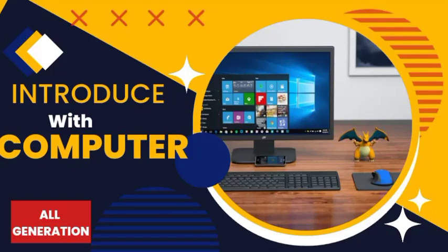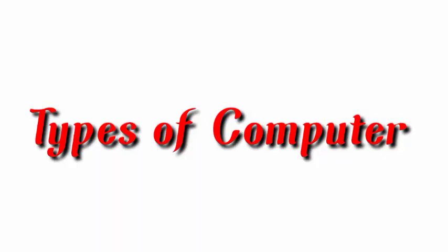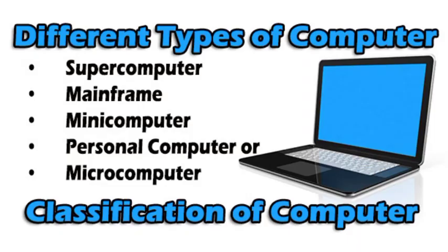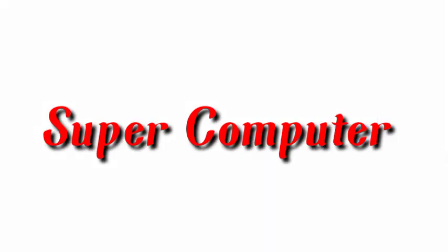Hello friends, welcome to my YouTube channel Make Learning Easy. In this video we are going to discuss Part 2 of computers, that is types of computers. There are four types of computers: first is supercomputer, second is mainframe computer, third is mini computer, and the last one is micro computers.